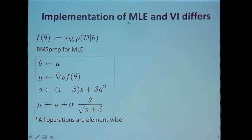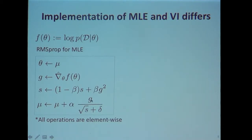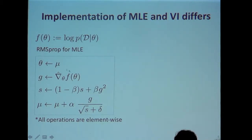My goal is to show that the implementation of MLE and variational inference is quite different. In MLE, denoting log likelihood by F, there's a method called RMSProp — a stochastic gradient method. You compute the stochastic gradient, do a gradient update where mu is your iterate, and scale the gradient with an adaptive learning rate. You maintain an online estimate of gradient magnitude (squared gradient) and adapt your step size accordingly. This is simple and available in most deep learning software — a plug-and-play method.